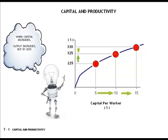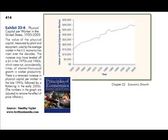Decades of data confirm both the shape of the curve and diminishing returns. I have taken a graph from Timothy Taylor's free online textbook that shows the shape of the aggregate production function. If you would like to access this book, please pause this video and use the link on the screen.